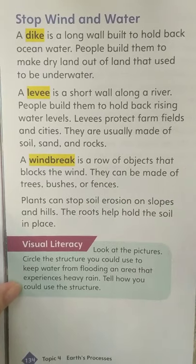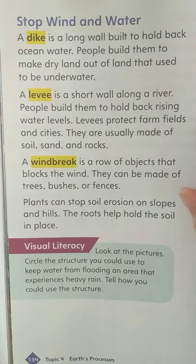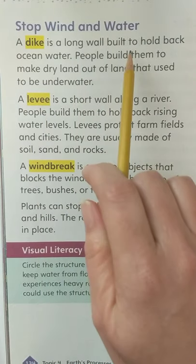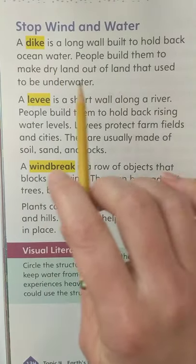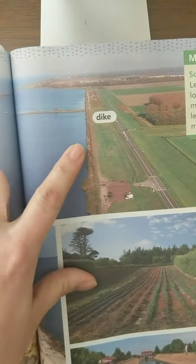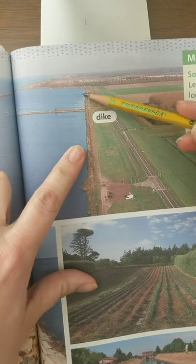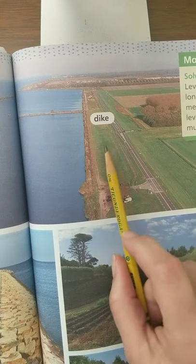People also make changes to the land to try to stop wind and water because we know it can cause problems. A dike is a long wall built to hold back ocean water — people build them to make dry land out of land that used to be underwater. Looking at the picture: this is ocean water, and there's this wall — a dike — and then we have land. This land here probably used to be underwater, and we can see they're using it for farming.